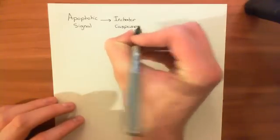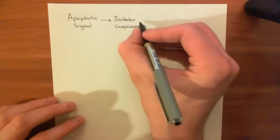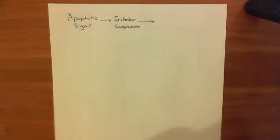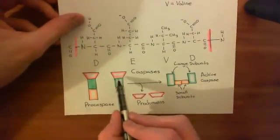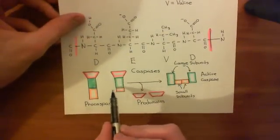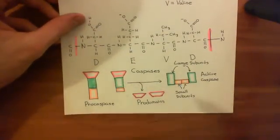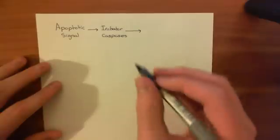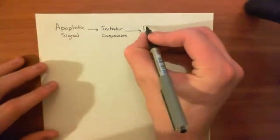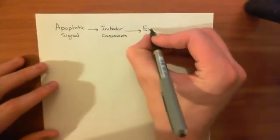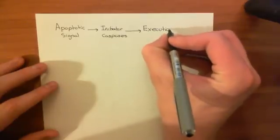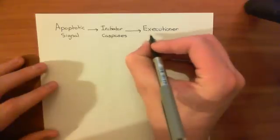And these initiator caspases are then going to chop up the pro-caspases in the way I showed you over here. It's going to chop the pro-domain away from the large subunit and chop the large subunit away from this small subunit and let them assemble into active caspases. So the initiator caspases are going to assemble more caspases through positive feedback. And these new caspases you are activating are called the executioner caspases.